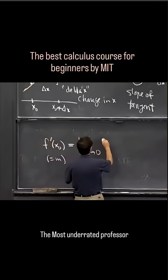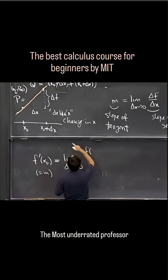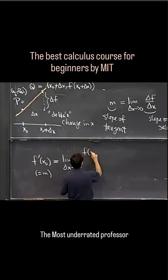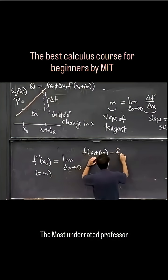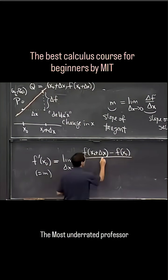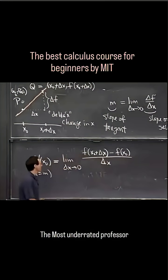The change in f is the value of f at the upper point here, which is x0 plus delta x, and minus its value at the lower point p, which is f of x0, divided by delta x. So this is the formula. I'm going to put this in a little box.